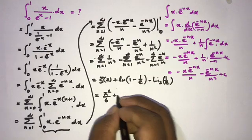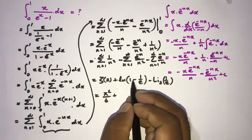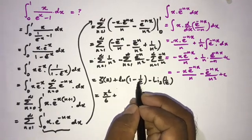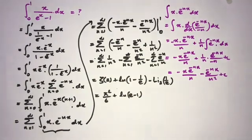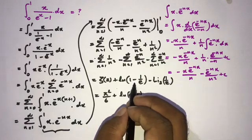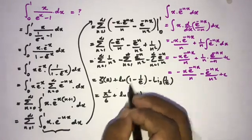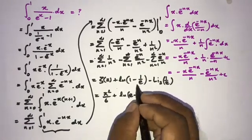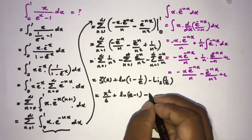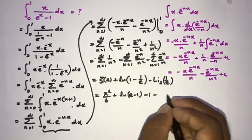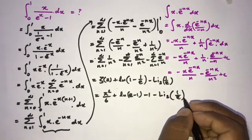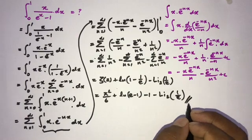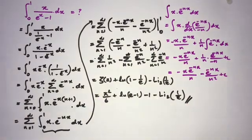We can simplify to: natural log of (e minus 1) minus the dilogarithm Li₂(1/e). So the final answer for this integral is pi squared over 6 minus 1 plus natural log of (e minus 1) minus Li₂(1/e). If you like this video, please subscribe to this channel. Thank you for watching.